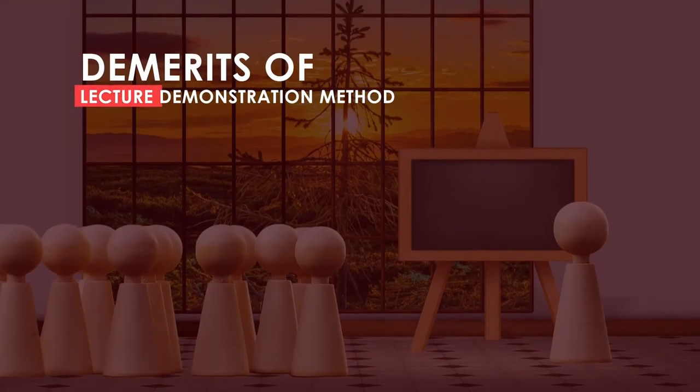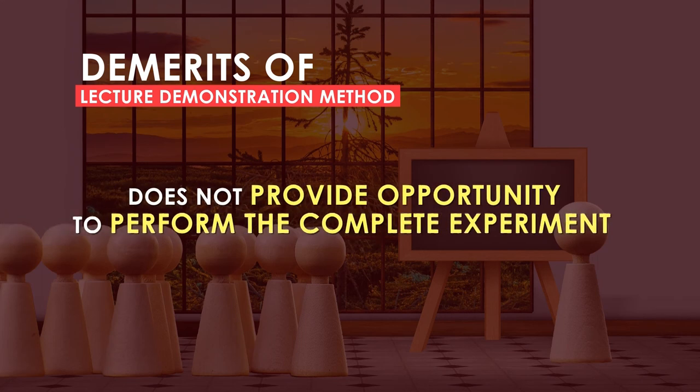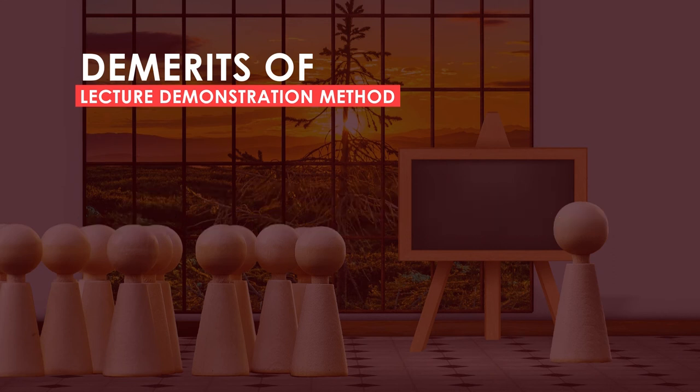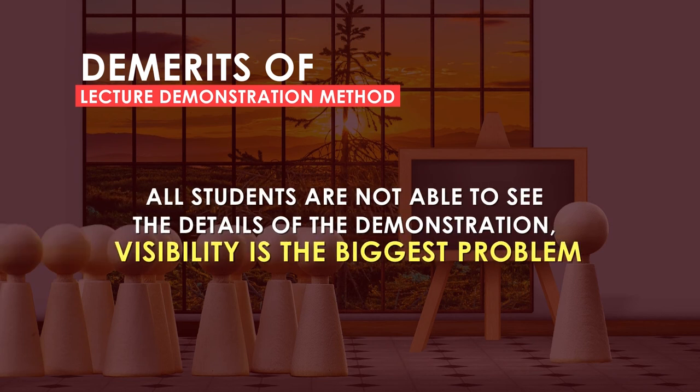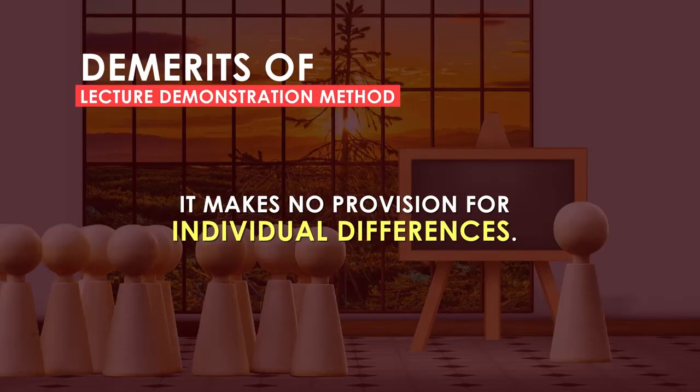The lecture-come-demonstration method also has some demerits. This method does not provide opportunity to perform the complete experiment, and it does not completely fit the learning-by-doing principle. Not all students are able to see the details of the demonstration — visibility is the biggest problem. It is assumed that all students are attentive, however it is difficult for every student to remain fully attentive. It makes no provision for individual differences, is not fully student-centered, most students are not actively involved in the practical part, and when the demonstration is complex, students find it difficult to understand. It also requires a lot of preparation in advance.